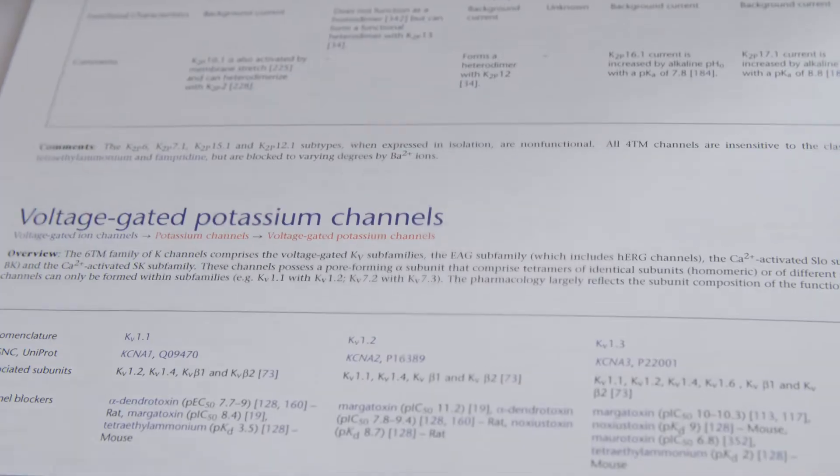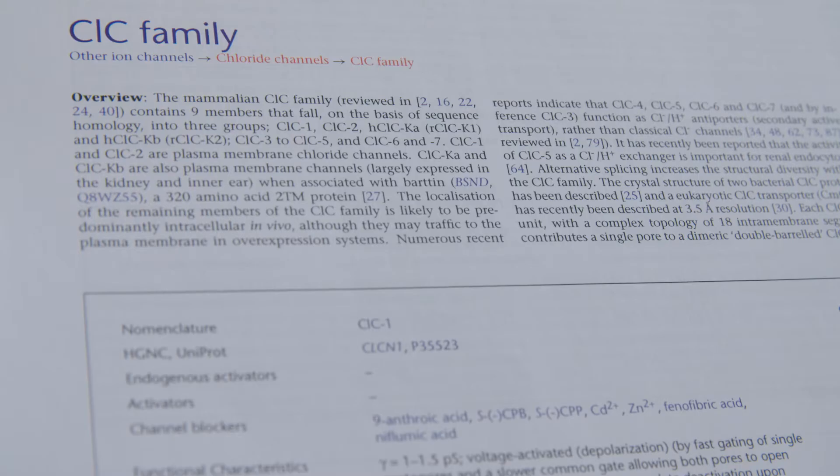We'd regard the Concise Guide as having two uses: both an educational use and a research use. As an educational resource, undergraduate pharmacology students or students doing medical or pharmacy degrees might be given a task of researching a particular topic and would use the Concise Guide as a starting point. For research, people who are new to a given area would want to find the ligands that best define the molecular target they're interested in.